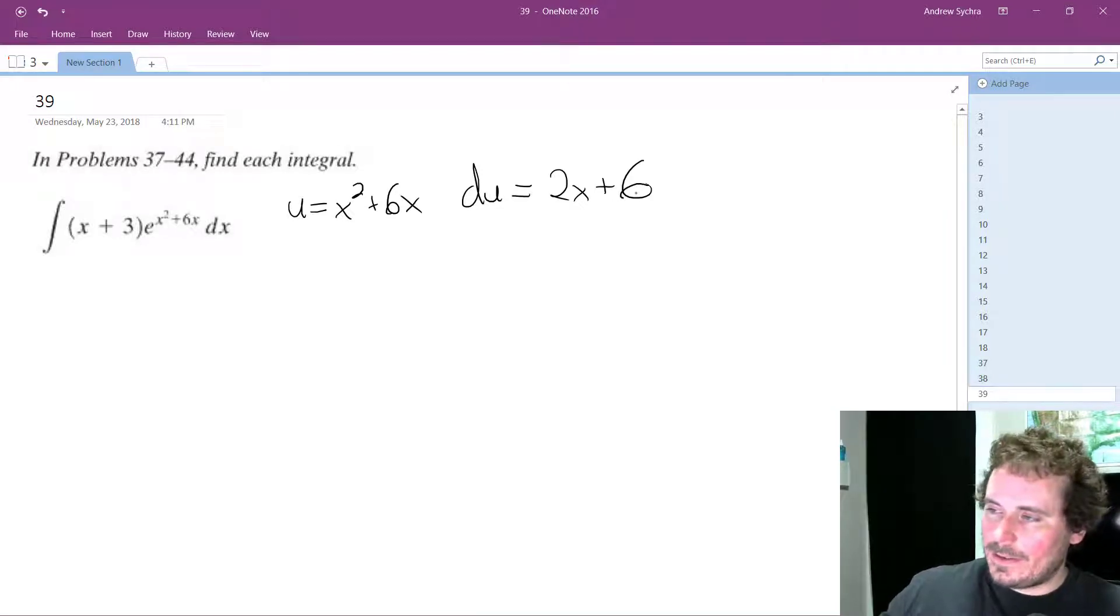Now something we have to be careful about here is we need to get du the equivalent of dx. So if you look here at our original integral, x plus 3, if you factor out a 2 out of the 2x plus 6, we get x plus 3.